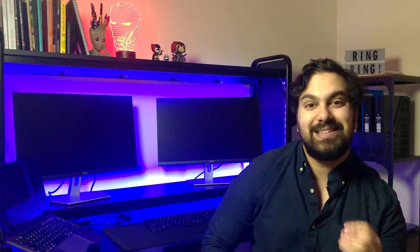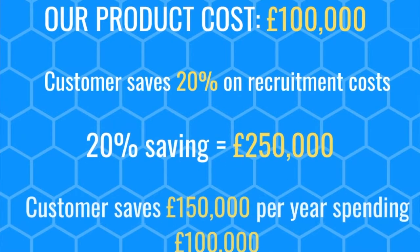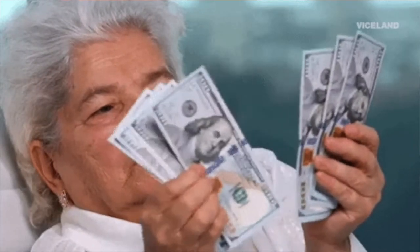M — Metrics. The M in MEDDIC stands for metrics. Simply put, it allows the customer to see exactly how our products can help solve their problems through specific metrics. For example, let's say we're selling a product to a prospect for £100,000. This product saves the customer around 20% on turnover costs, saving the organisation around £250,000 per year — demonstrating a £150,000 net saving, which is a 150% return. Putting facts and figures in that way makes you much more likely to move the prospect along the sales cycle.